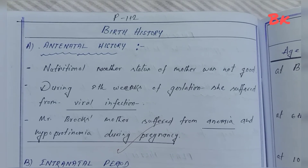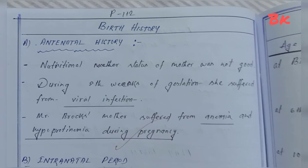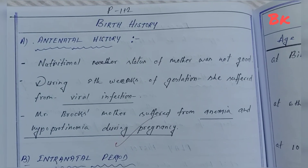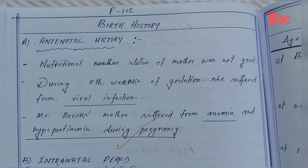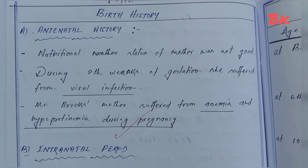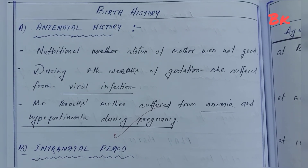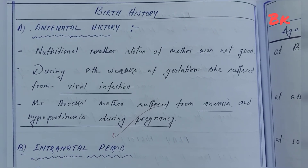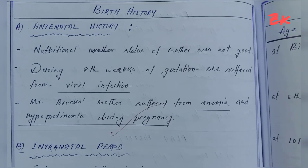Birth history — antenatal history: nutritional status of the mother was not good during the antenatal period. During 8 weeks of gestation she suffered from viral infection. Mr. Broke's mother also suffered from anemia and hypoproteinemia during pregnancy.